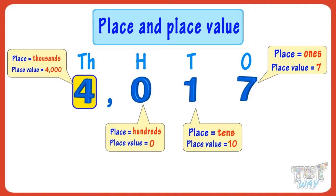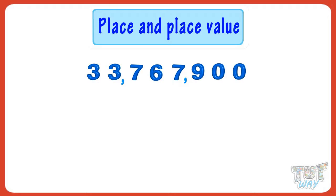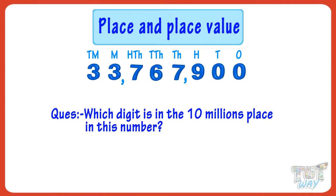The place value of four is four thousand. So kids, now you have a fair idea of what is place and place value. Let's look at a larger number: three million, seven hundred sixty-seven thousand, nine hundred. Now let's answer a few questions. Which digit is in the ten millions place in this number?